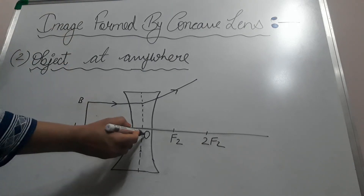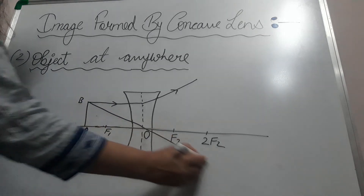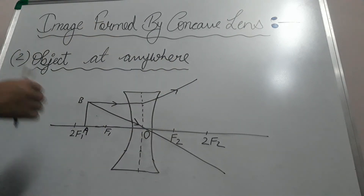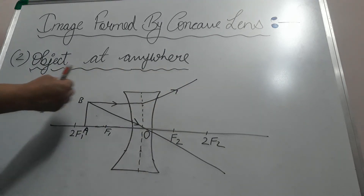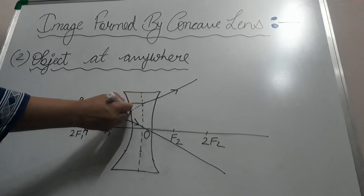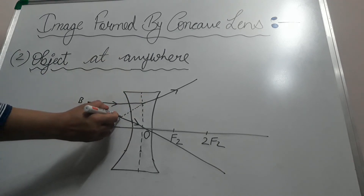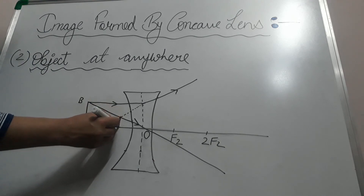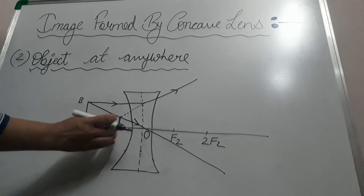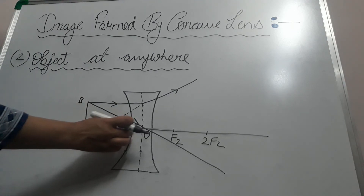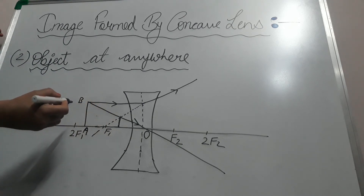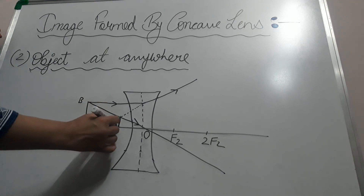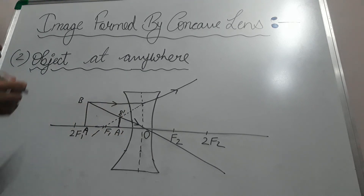The second ray passes through the optical center. Now these two rays cannot meet on this side, so we extend them to the back side. Where do they meet? Both rays meet at this point — so the image forms here, between F1 and O. This is a virtual image because the rays are not actually meeting, they are only supposed to meet. So the image is virtual, erect, and smaller than the object.